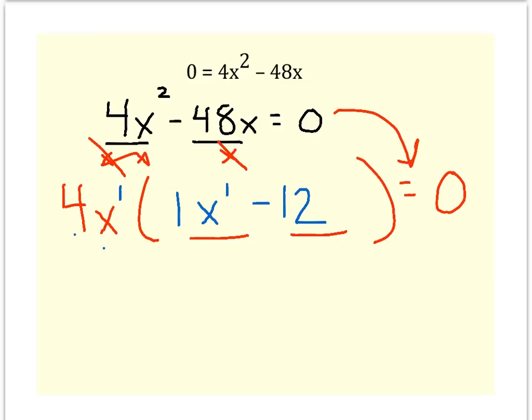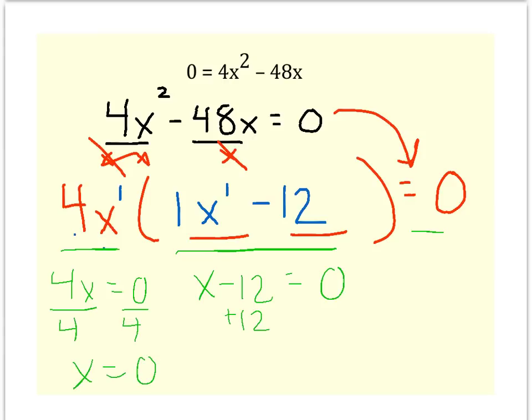So now that I have this term and this one, I have to set them both equal to zero. 4x equals zero and x minus 12 equals zero. 4x equals zero. To get the x alone, you divide by 4, you get x equals zero. Here you add 12 to both sides and you get x equals 12.